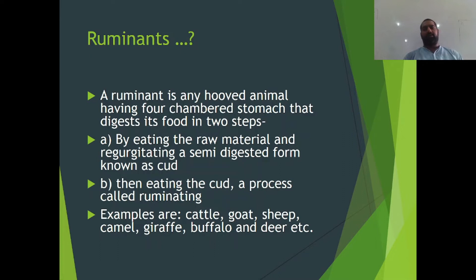What are the ruminants? A ruminant is a hooved animal whose stomach contains four chambers, and it digests food in two steps. The first step is eating raw material, sending it into the stomach, and then by regurgitation it is sent back to the mouth, chewed again, and sent back to the stomach. Examples of ruminants are cattle, buffalo, goat, sheep, giraffe, and deer.